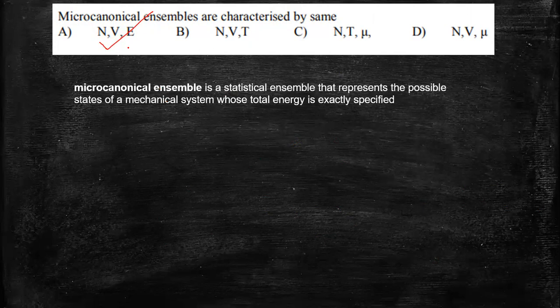So an N, V, E kind of ensemble is known as a microcanonical ensemble. Now N, V, E is microcanonical, N, V, T is canonical.